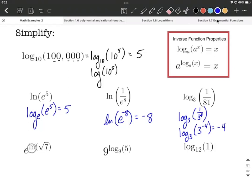but this one is in the format of the bottom rule here for our inverse function property. So we get that very nice cancellation, and this is just going to equal the square root of seven.